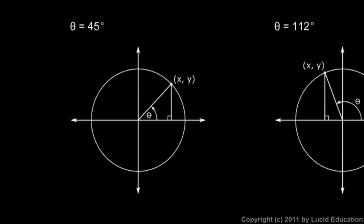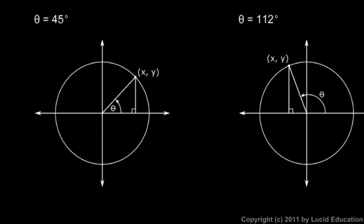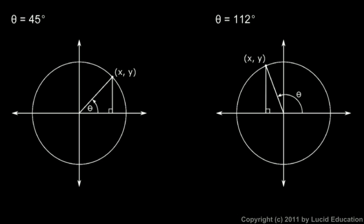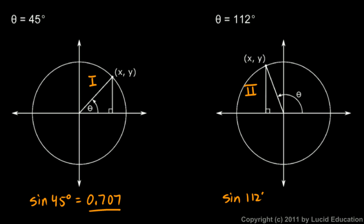Here are some quick examples, one angle in each quadrant. For 45 degrees — and these pictures are accurately drawn — the sine of 45 degrees is approximately 0.707. We're in quadrant 1 and it's a positive number. If we rotate into quadrant 2, the sine of 112 degrees comes out to 0.927 to three decimal places. We're in quadrant 2 and again it's a positive number.